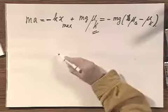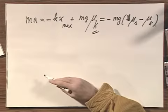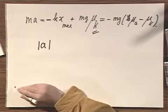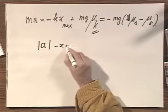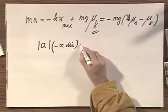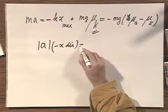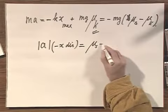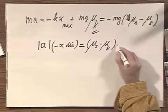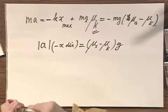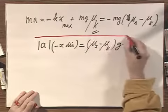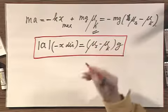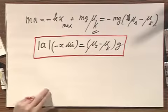Substituting in x_max, the equation of motion also equals minus mg times k times (μs minus μk). The magnitude of the acceleration - which is in the minus x direction - equals, after m cancels, (μs minus μk) times g. So that's the instantaneous acceleration once I break it loose.